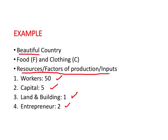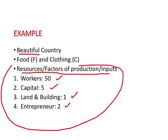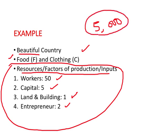Using these resources, the country can produce two goods: one called food (F) and the other called clothing (C). Given this fixed supply of resources and the available technology, this country can produce a maximum of 5,000 units — whether food, clothing, or any combination. The limit is that given the resources and technology, the maximum it can produce is 5,000 units.